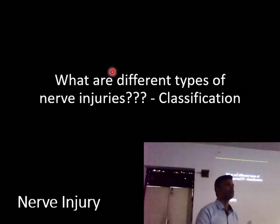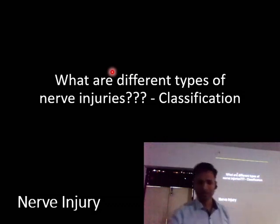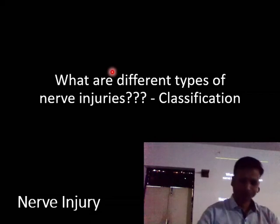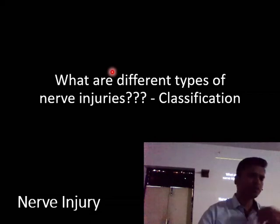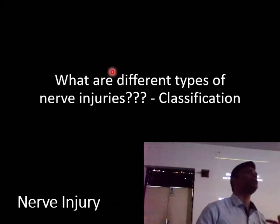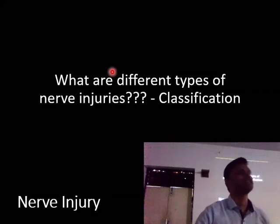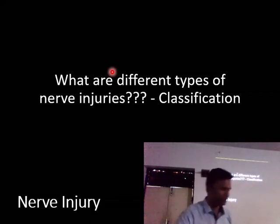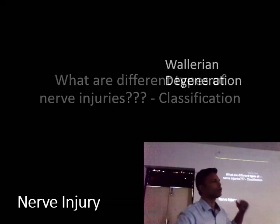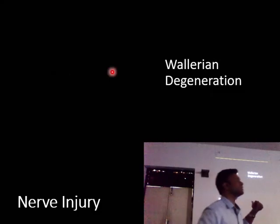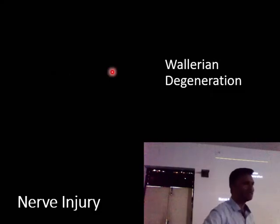The purpose of classification is for better treatment planning and communication. Now before we talk about the different classifications of nerve injuries, we need to talk about something called Wallerian degeneration.